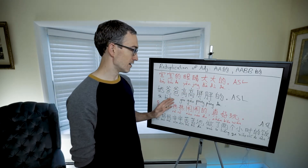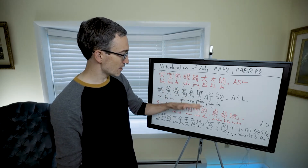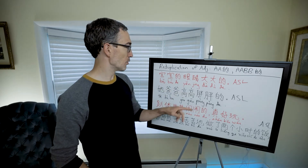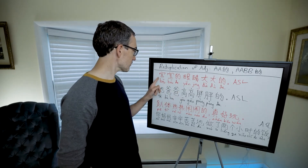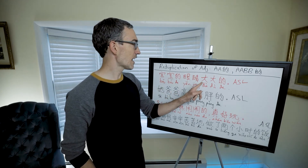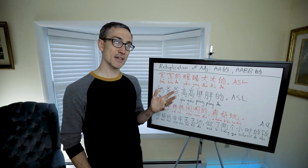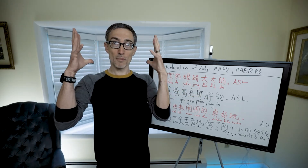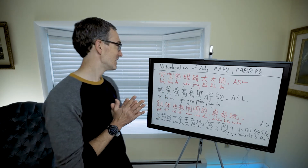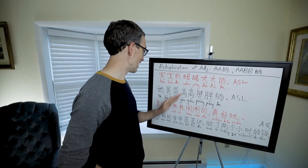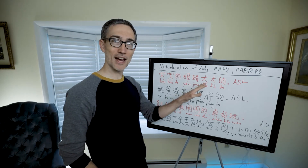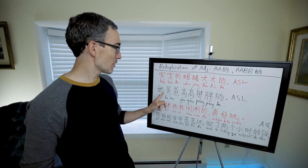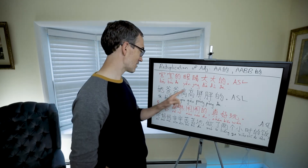All these examples are from AllSet Learning. The most basic one is just the AA + de pattern: 'bǎobao de yǎnjīng dàdàde' — describing a baby's eyes. The baby's eyes are so big! 'Bǎobao de yǎnjīng dàdàde.' You will probably hear that exact sentence in real life.